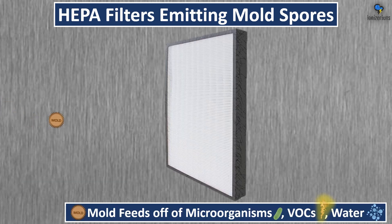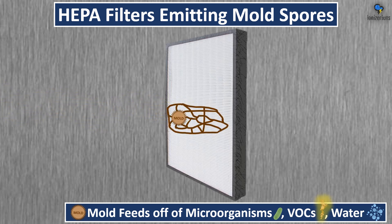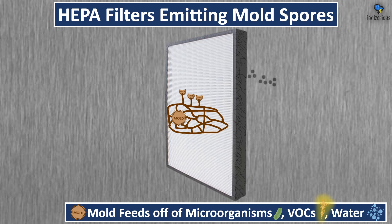When your HEPA filter catches a mold spore, it's not dead — it's still there. It can feed off of microorganisms, volatile organic compounds, humidity, and water, and grow. Now the mold is ready to release spores again. When it's in your filter, these spores go right through the filter for you to inhale.